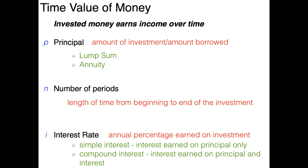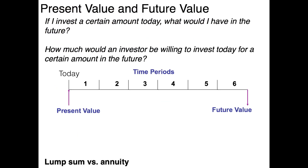Knowing these three pieces — principal, number of periods, and interest rate — let's talk about two key concepts: present value and future value. For example, if I invest a certain amount today, what would I have in the future? Or another way to word it: how much would an investor be willing to invest today for a certain amount in the future?